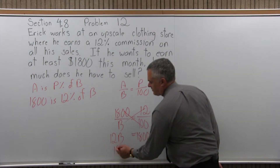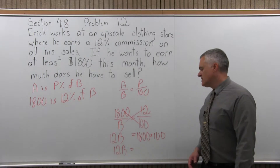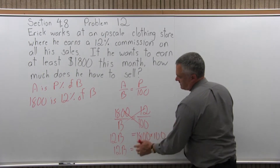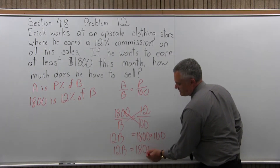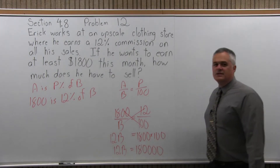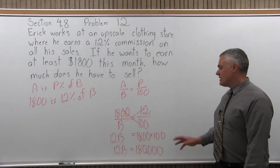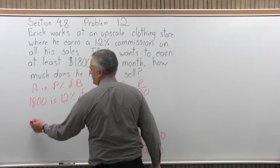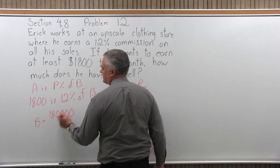Let's simplify the multiplication: 12B equals 1,800 times 100. Those are very big numbers, but very easy to multiply. Just ignore the zeros for a minute and focus on the non-zero numbers: 18 times 1 is 18. How many zeros did you ignore? Four zeros — so put 18 with four zeros after it: that's 180,000. So I have 12B equals 180,000, which means B equals 180,000 over 12.